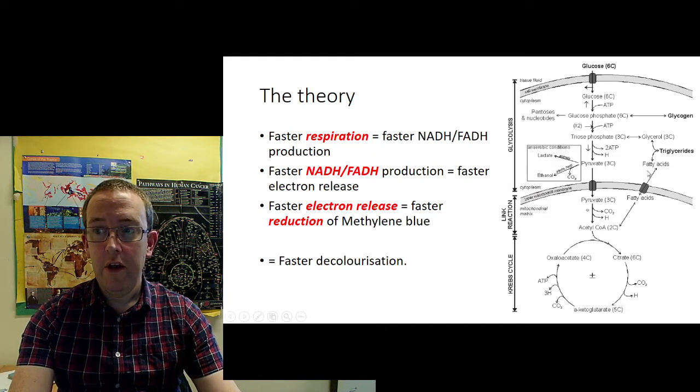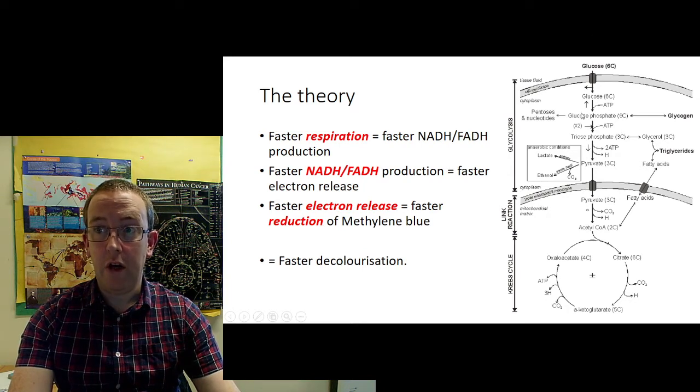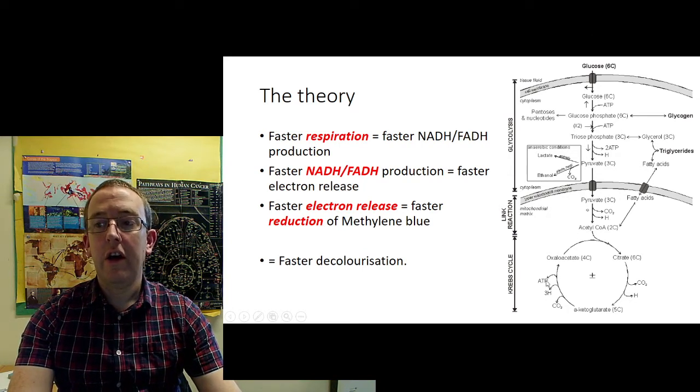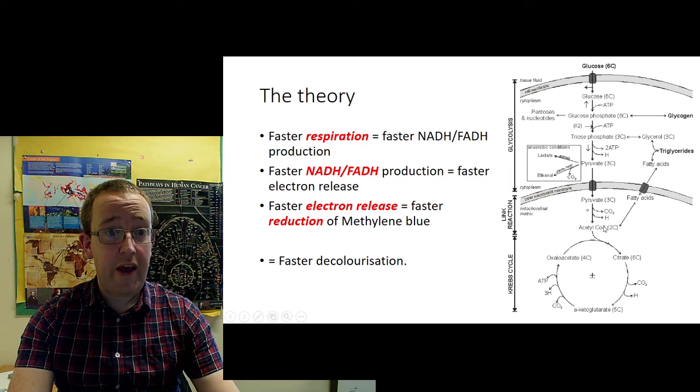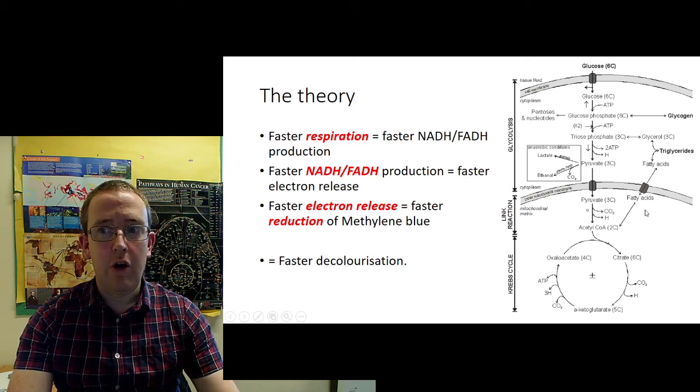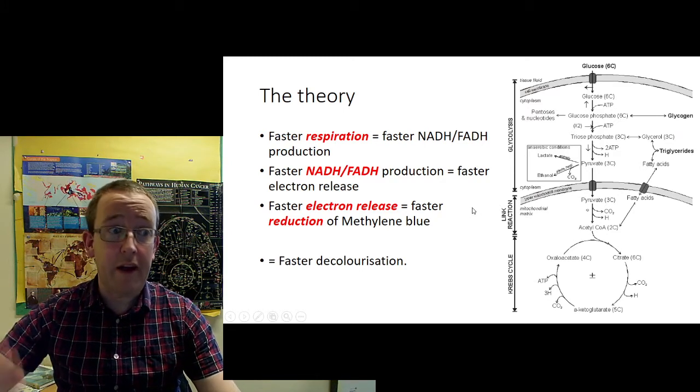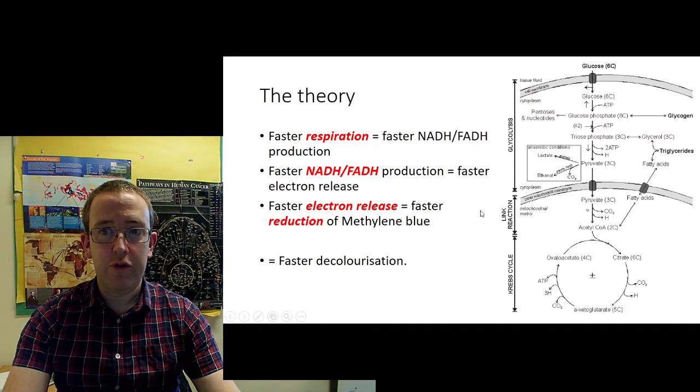So you should remember as well, the other stages of respiration here, where all the, so we've got the glycolysis, we've got the link reaction, and we've got the Krebs cycle there, where all our hydrogens here are being carried away by our reduced carriers. So it's the production of those guys that's ultimately going to give us our supply of electrons in the electron transport chain.